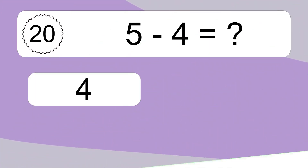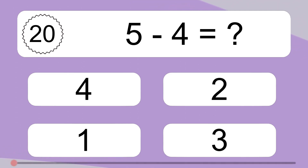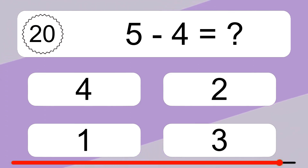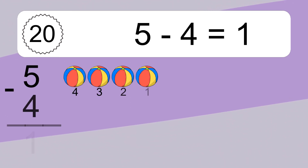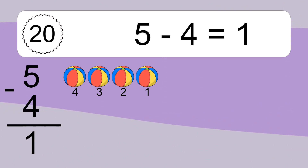5 minus 4 equals what? 5 minus 4 equals 1. Let's count it: 4, 3, 2, 1.